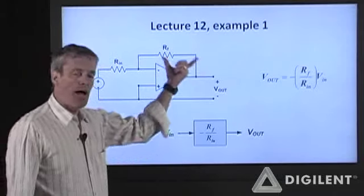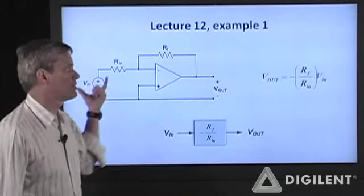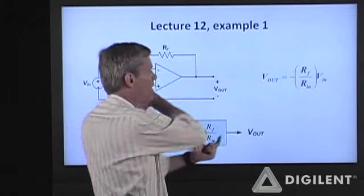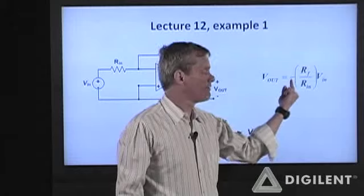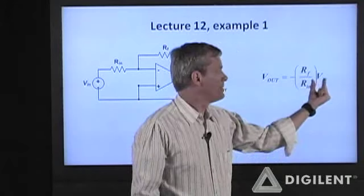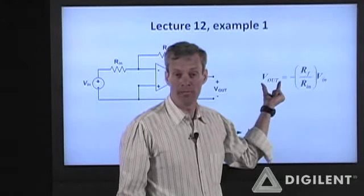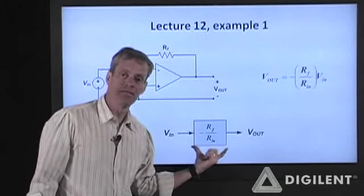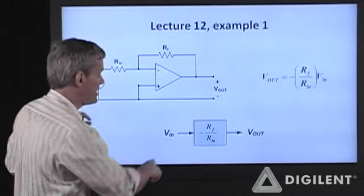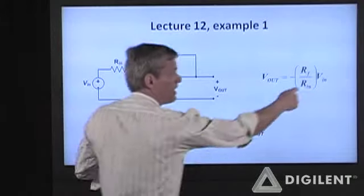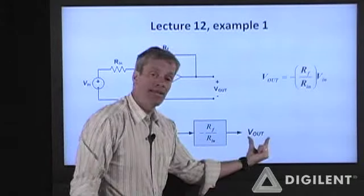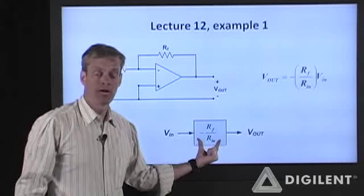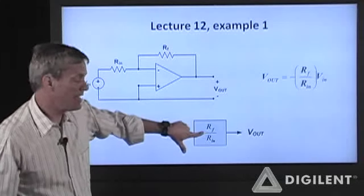In our last lecture, the first operational amplifier circuit example we did showed that Vout equals negative Rf over Rin times the input voltage. We called this an inverting voltage amplifier because of the negative sign — it takes some input voltage, amplifies it, and gives an output voltage. The gain is the ratio Rf over Rin, and gains are always positive.